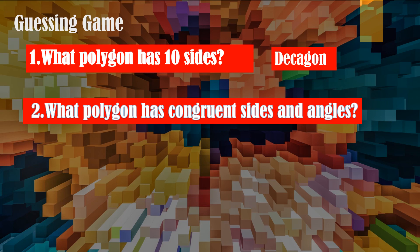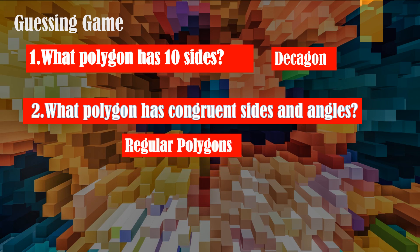A polygon that has congruent sides and angles is called a regular polygon. Correct.